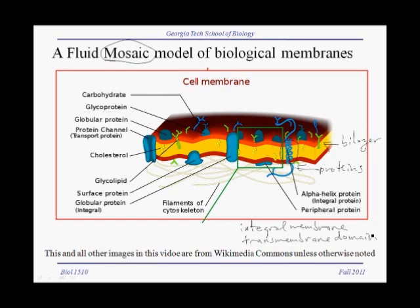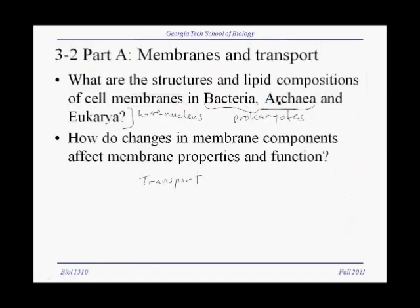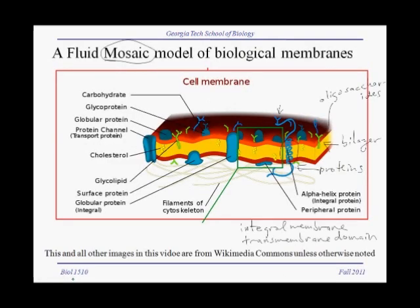In addition to proteins embedded in the lipid bilayer, we find a number of carbohydrates. These are essentially oligosaccharides, and they may be covalently linked to lipids themselves, or proteins also have oligosaccharides. Proteins containing oligosaccharides are called glycoproteins.